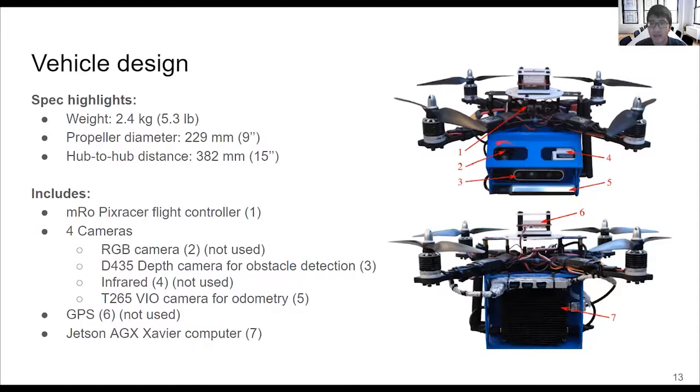An Intel RealSense D435i depth camera is used for detecting obstacles. Two other cameras, one RGB camera and one infrared camera, are not used for this project. The state estimation is purely based on the T265 VIO camera, and GPS is not used. All the computations for the path planner run on the onboard computer, which is a Jetson AGX Xavier.